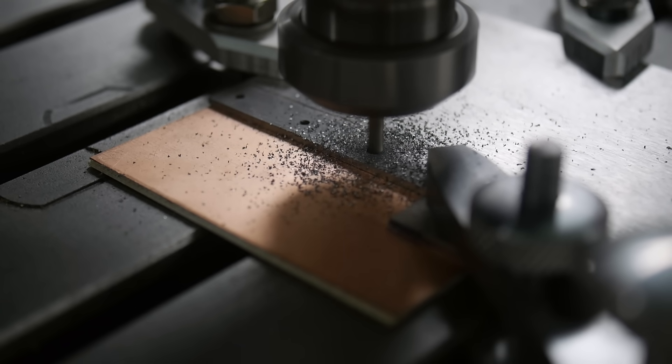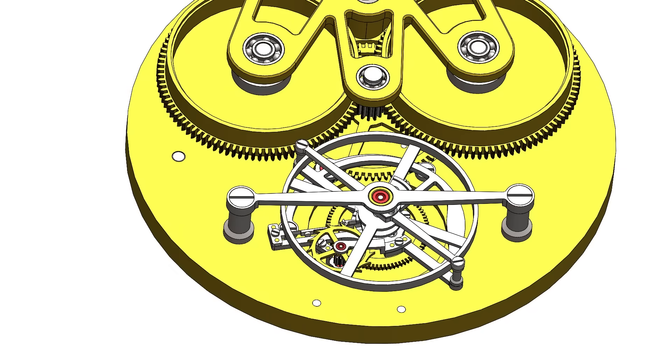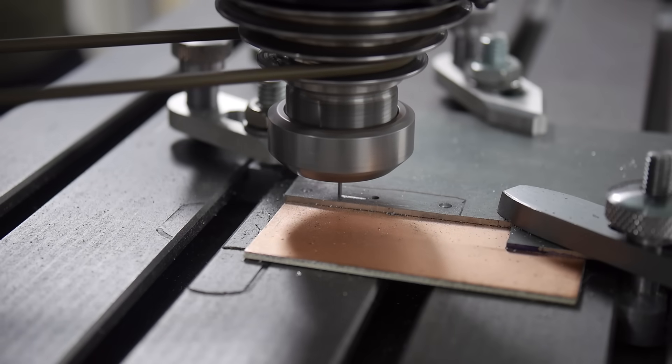The purpose of the bridge is to support the tourbillon carriage, which contains the escapement and the balance wheel. This assembly is the most important part of the watch and certainly the most difficult to make.